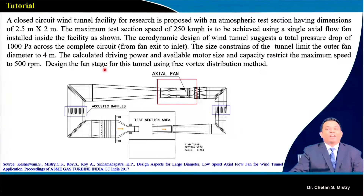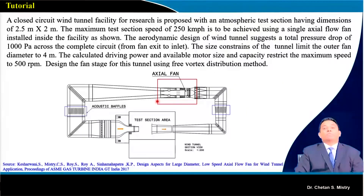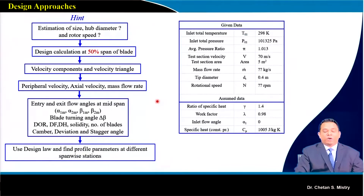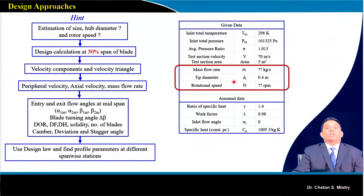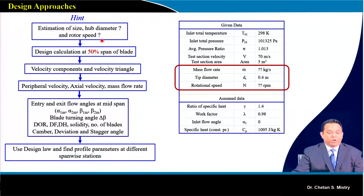This is a real kind of design. In order to proceed, we have constraints already defined. We have inlet pressure, temperature, pressure ratio, test section velocity of about 70 m/s, mass flow rate, total tip diameter, and rotational speed to decide. Starting from estimating the size, we need to decide the hub diameter and rotational speed. We will do our design at 50 percent span, calculate different velocity components, and plot velocity triangles.